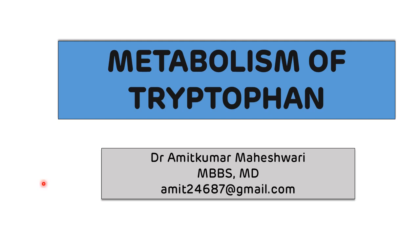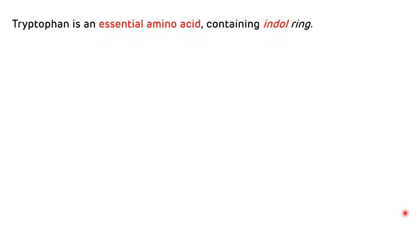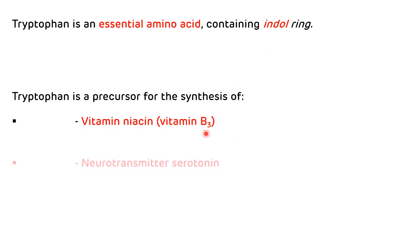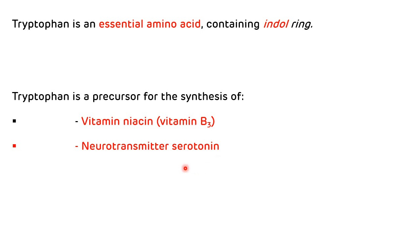Hello all, welcome to my YouTube channel, Biochemistry Basics by Dr. Amit. In the previous video we saw the metabolism of phenylalanine and tyrosine. In today's video we will see the metabolism of another aromatic amino acid, tryptophan. It is an indole ring-containing essential amino acid, important for the synthesis of various precursors like niacin (vitamin B3), neurotransmitter serotonin, and hormone melatonin.